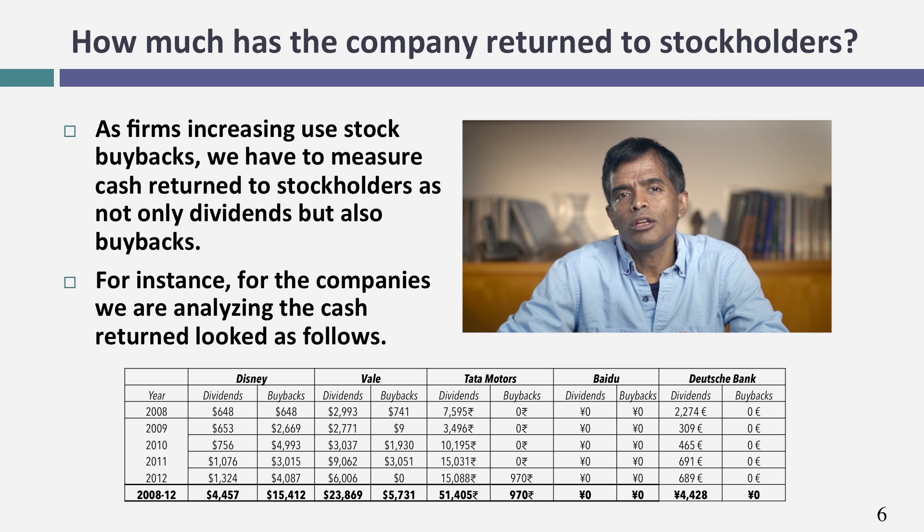That is not unusual. If you remember the last session, we talked about how U.S. companies have increasingly turned to buybacks, and you see that phenomenon play out with Disney. Now of course, you might ask: $19.9 billion — is that too much cash or too little cash? We're not quite ready to answer that question yet, but at least we have a sense of how much our companies have returned in cash to their stockholders.